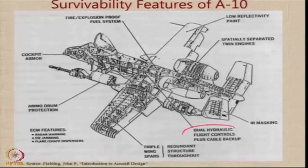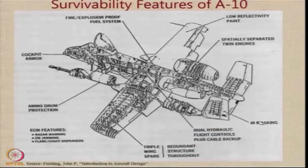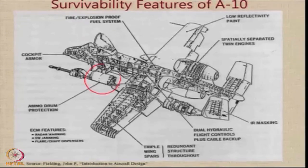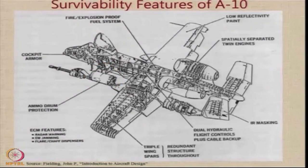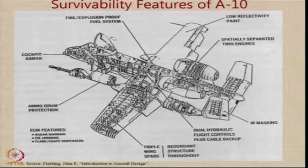The A-10 has dual hydraulic flight control with a cable backup — if the hydraulic system fails completely, the aircraft can be brought home using only a cable-based control system. There are three spars in the wing, providing a redundant structure. The ammunition drum carrying the aircraft's Gatling gun ammunition is also protected, as it is the main weapon of this aircraft. The pilot is the weakest link, so the fuselage sides are plated with armor to make the aircraft virtually immune to fire from the ground, though this adds significant weight.